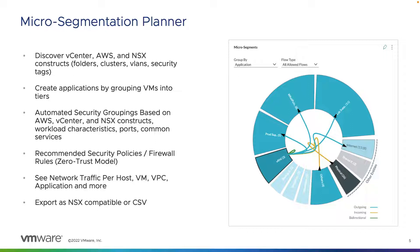We can export the CSV or XML file by clicking on the three dots in the right-hand corner, and utilize these exports to implement within our firewalls — whether it's the NSX distributed firewall or a third-party firewall. It provides you with a list of firewall rules based on the group-by you chose from a source and destination perspective, which really helps speed up micro-segmentation within your infrastructure.